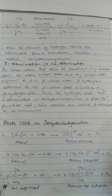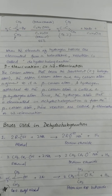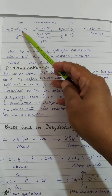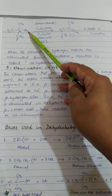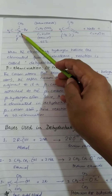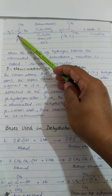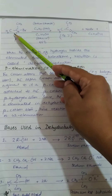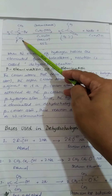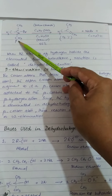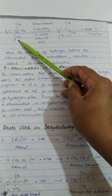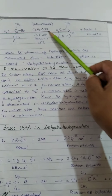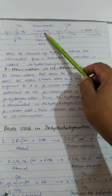اس میں آپ یہ دیکھئے کہ alpha carbon، جس carbon سے leaving group attached ہے، وہ alpha carbon ہے اور اس کے adjacent carbon جو کہ proton رکھتے ہیں، یعنی hydrogen رکھتے ہیں، وہ سب beta carbon ہیں۔